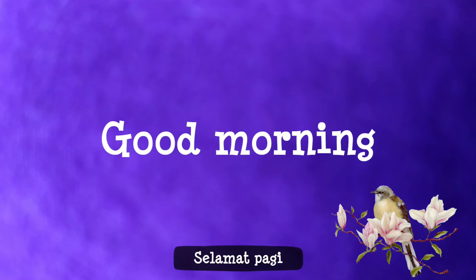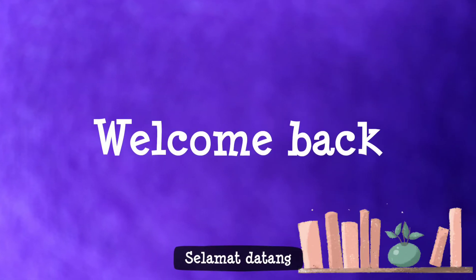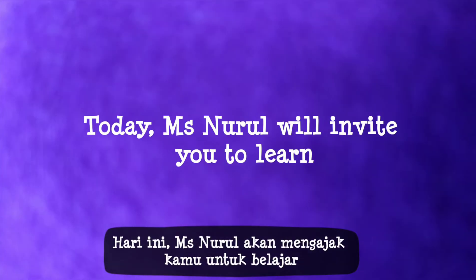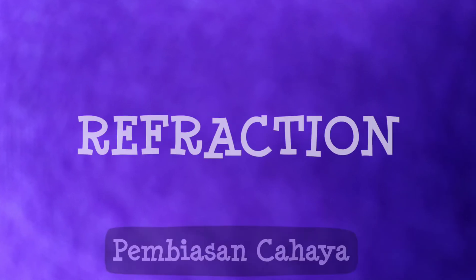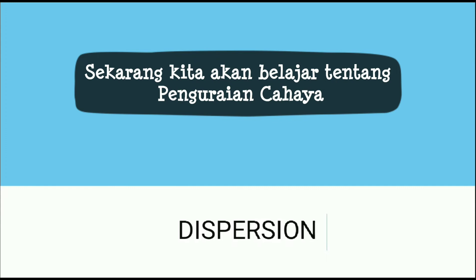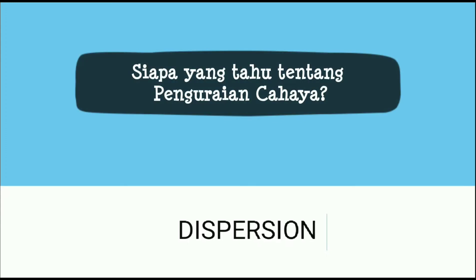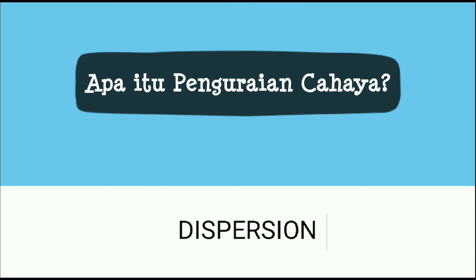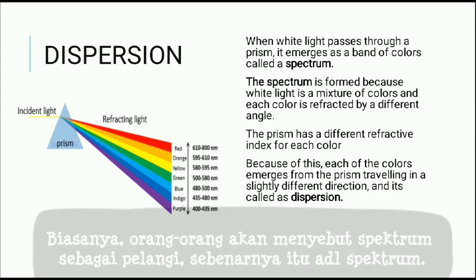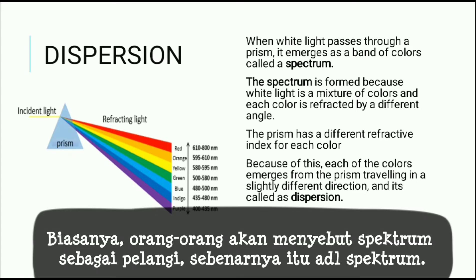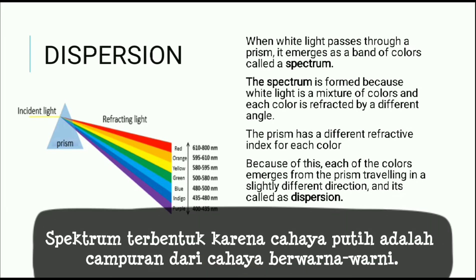Good morning and welcome back. Today we will learn about properties of light. Yesterday we already learned about reflection and refraction. Now we are going to learn about dispersion. Dispersion is when white light passes through a prism and emerges as a band of colors called a spectrum. People often call it a rainbow, but it's actually a spectrum.